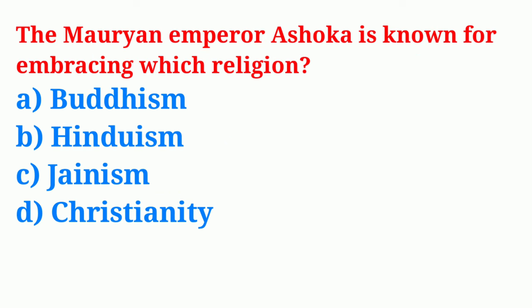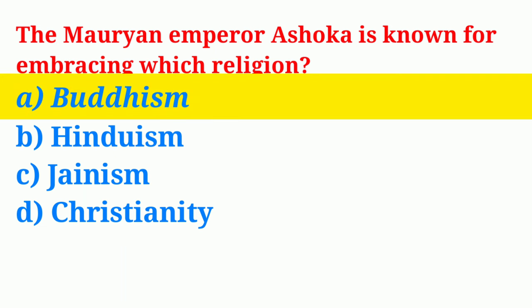The Maulian Emperor Ashoka is known for embracing which religion? Answer A. Buddhism.